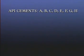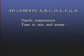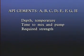The API has classified cements according to these properties, and choosing the proper class of cement for a given section of casing will depend upon the depth and therefore the temperature at which setting will occur, the time allotted to mix and pump the slurry, and the strength required to withstand formation pressures and support the casing.